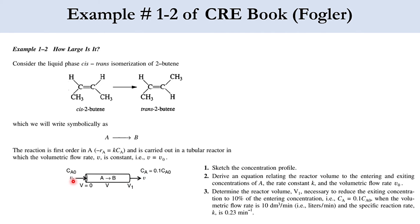We have three tasks. First, sketch the concentration profile. Second, derive an equation relating reactor volume to the entering and exiting concentrations CA0 and CA, the rate constant k, and volumetric flow rate V0. Third, calculate the volume given: CA = 0.1·CA0, k = 0.23 per minute, and V0 = 10 cubic decimeters per minute.